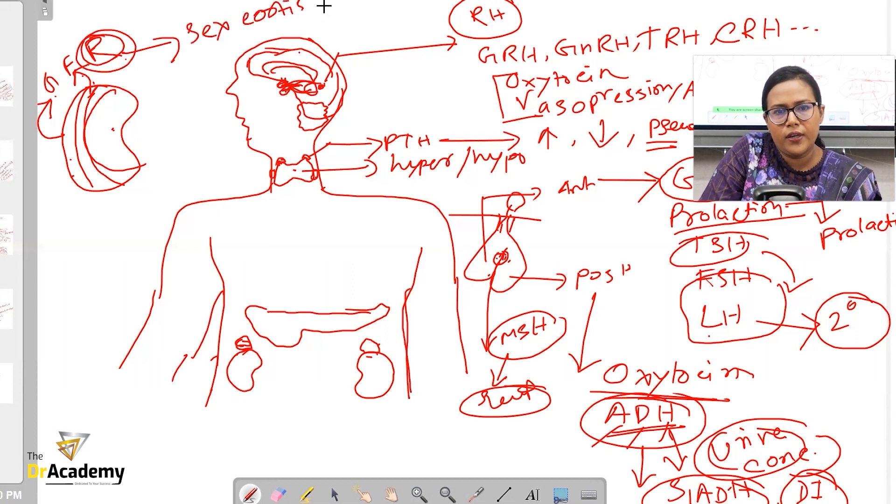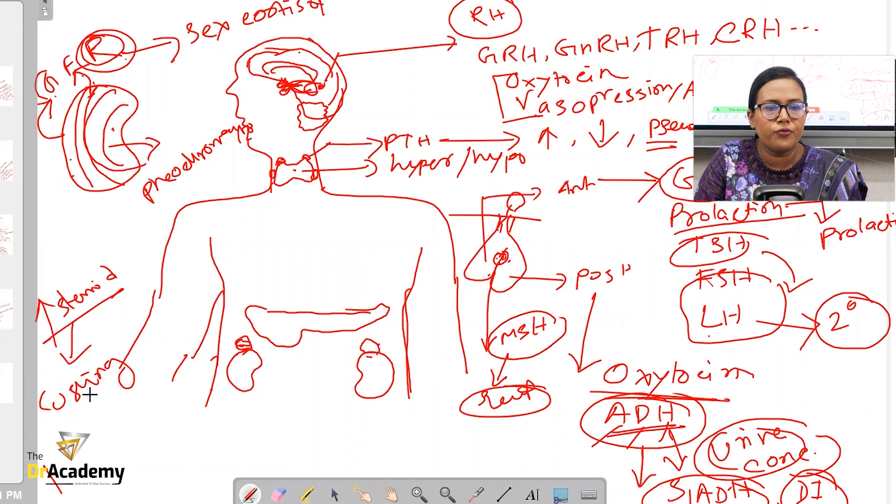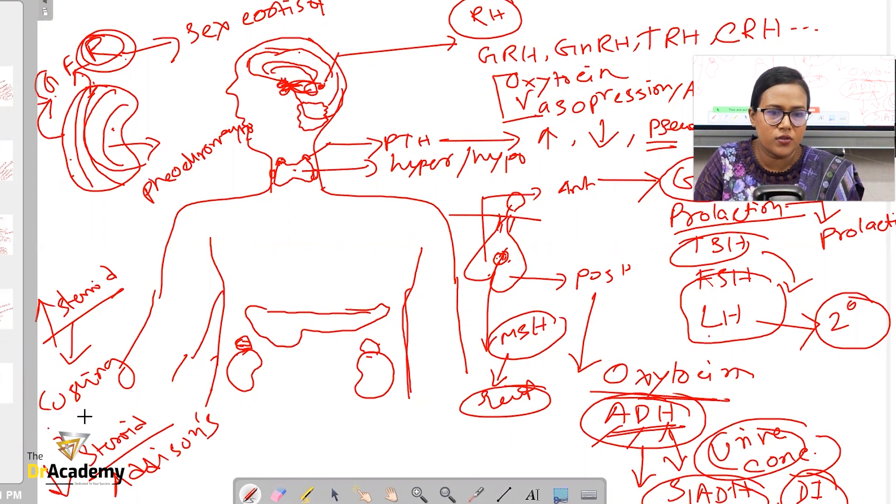From the medulla, the abnormality is pheochromocytoma. If there is excessive amounts of steroid, that can lead to Cushing's. If there is low levels of steroid - in general terms, we'll discuss details later - that is known as Addison's. Another is excessive mineralocorticoid, known as Conn's syndrome.